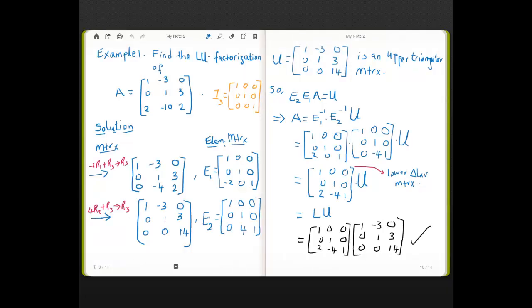Example 1. Find the LU Factorization of the matrix A. So, this is the matrix A, and this is I_3, the 3 by 3 identity matrix. What we do is reduce the matrix A to an upper triangular matrix, and record the elementary matrices created along the way.